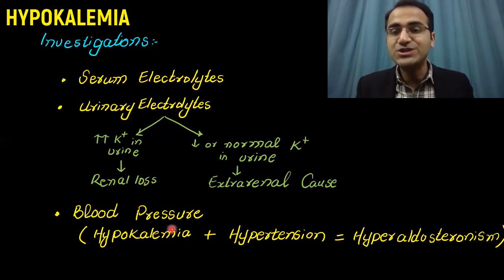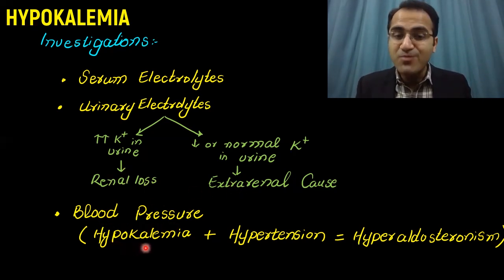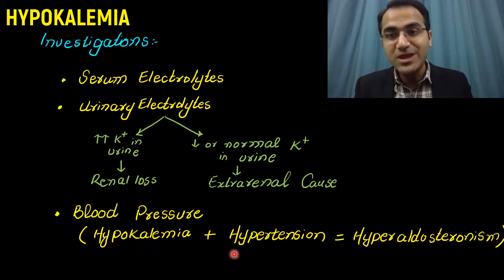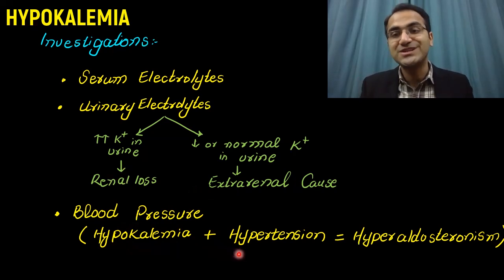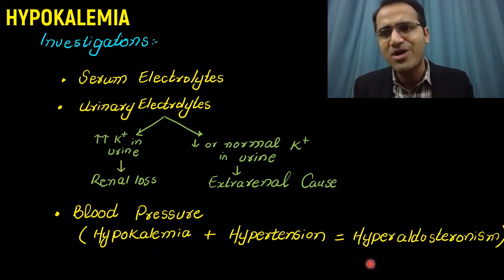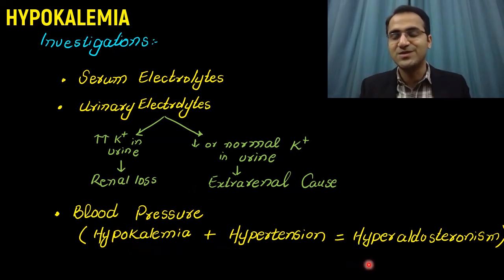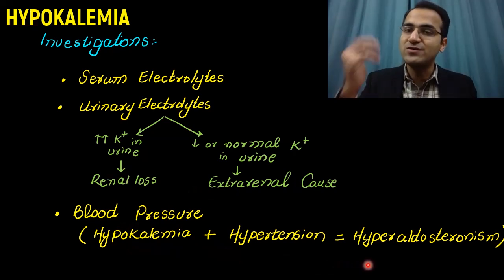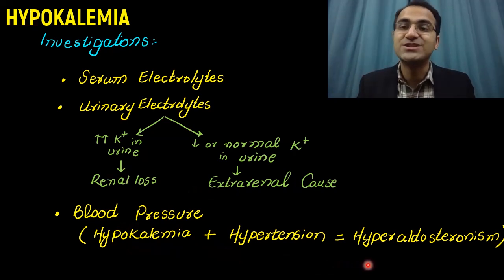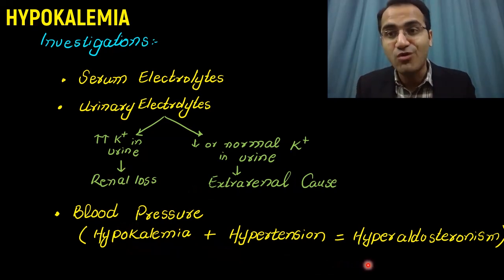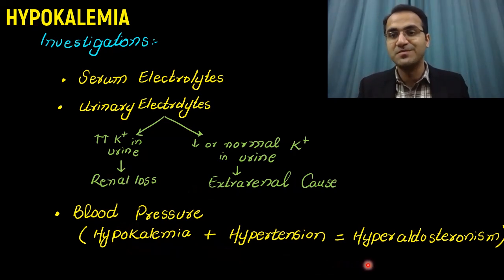Blood pressure should also be checked. Hypokalemia with hypertension is seen in patients with hyperaldosteronism, such as patients with high aldosterone levels like those with Conn's syndrome.